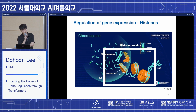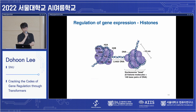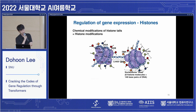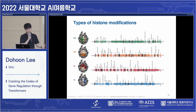Histone proteins coexist with DNA inside the nucleus. In fact, the DNA is wrapping the histone proteins. As the histone protein is one of the most tightly associated proteins with DNA, their chemical modifications — also called histone modifications — are one of the major factors that regulate gene expression. There are so many types of histone modification, so you can imagine the complexity of the combination of histone modifications.